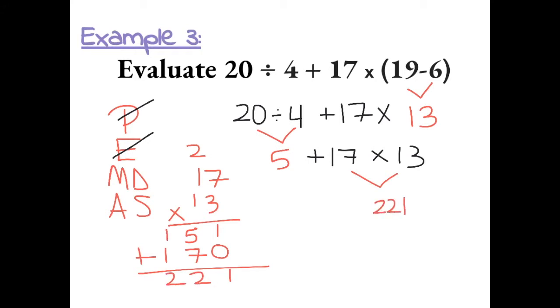We can bring everything else down. Now that we've done all multiplication and division, we can add or subtract. 221 plus 5 gives us a value of 226.